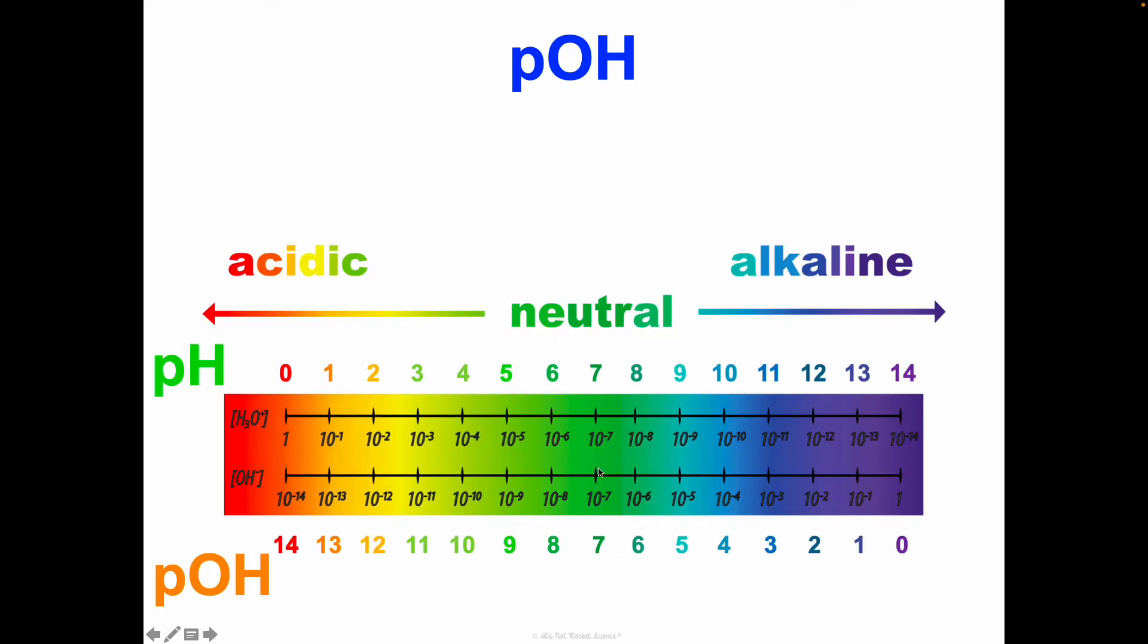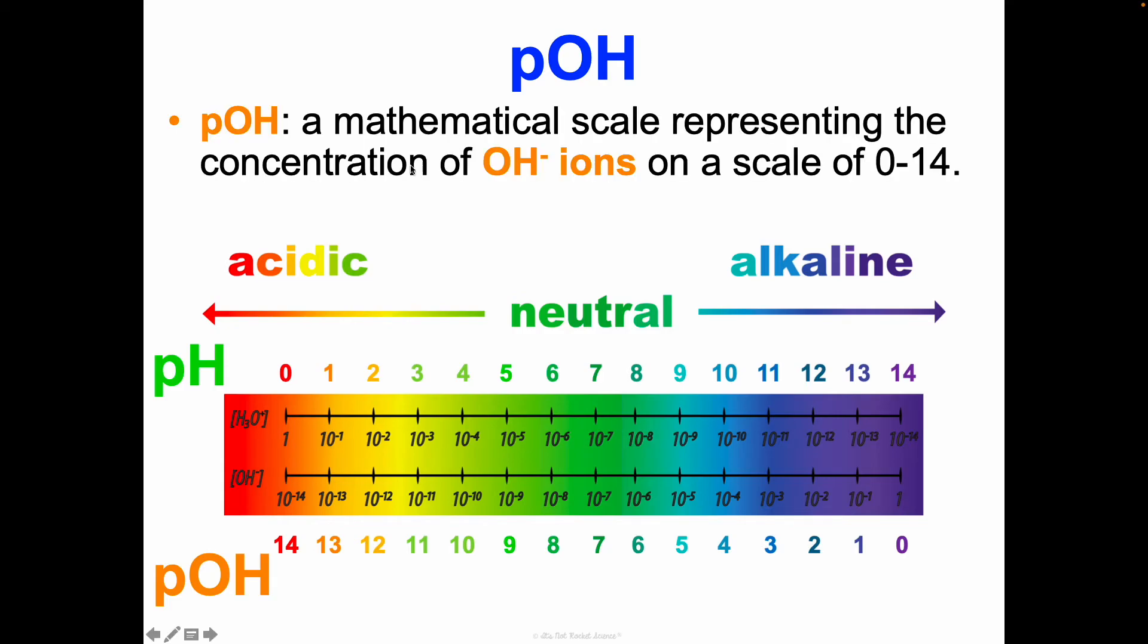Now let's talk about pOH. pOH is doing what pH does for hydronium ion concentration, but for hydroxide ion. pOH is a mathematical scale representing the concentration of hydroxide ions on that scale of 0 to 14. The greater the hydroxide ion concentration, the lower the pOH. If you have a ton of hydroxide ions, you're gonna have a pOH of 0 and a pH of 14.